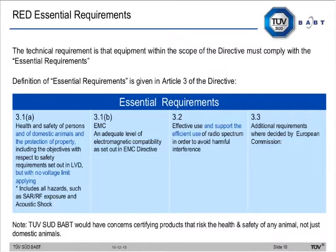The essential requirements are in Article 3 of the directive. There are slight changes: Article 3.1a now includes the protection of domestic animals and property. EMC in 3.1b is very much the same as the R&TTE directive. For Article 3.2, the radio essential requirement, it's not only effective use of the radio spectrum but radio equipment must also support the efficient use of the spectrum — quite an important change. Article 3.3 covers additional requirements.